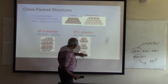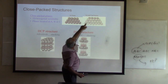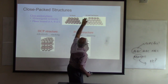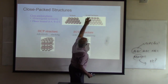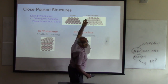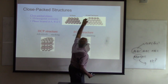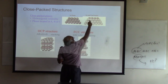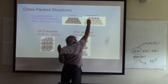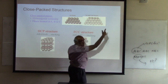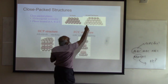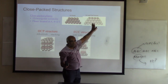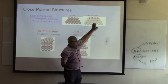In a perovskite unit cell, the A cation is at the origin (0, 0, 0), the B cation is at the body center (½, ½, ½), and the oxygen atoms are at the face centers like (½, ½, 0), (0, ½, ½), etc. Counting atoms: one from corners, one from the body center, and three from the six faces (6 × ½ = 3), totaling five atoms per conventional unit cell.